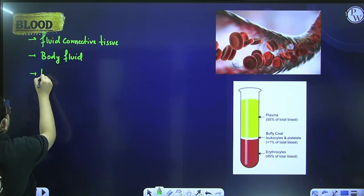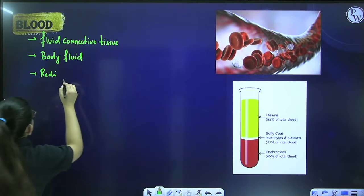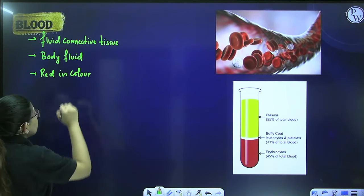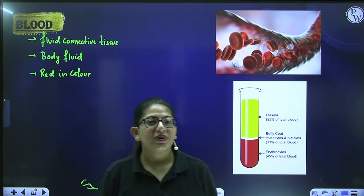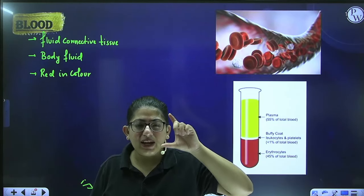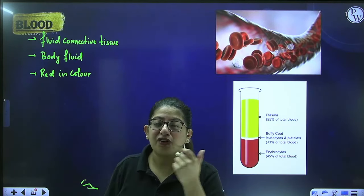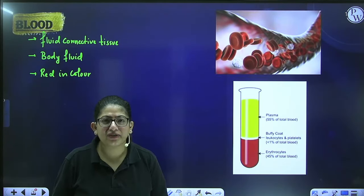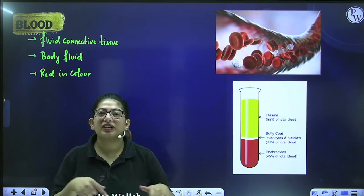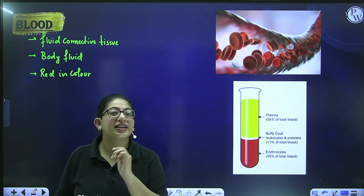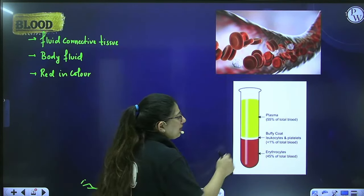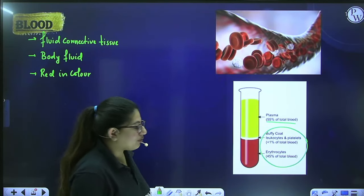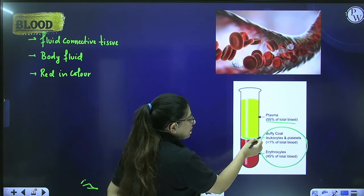Blood is red in color. If I want to see what is present in blood, I will take a test tube with a sample of blood and centrifuge it. A centrifuge works like a washing machine — it spins fast and things settle down according to their sedimentation rate. Blood is made up of 55% plasma and 45% other things. In that 45%, there is less than 1% of a white buffy coat containing cells.